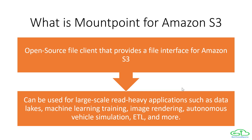Basically, it's an open source file client which provides a file interface to access our S3 buckets. It translates local file system API calls to S3 object API calls, which are normally REST API calls in the backend. It supports file-based workloads that perform sequential and random reads. It's a good fit for sequential as well as random read cases where it can have multiple access towards the S3 bucket, and where workloads do not need full POSIX semantics, because it does not have all POSIX semantics available at this point.